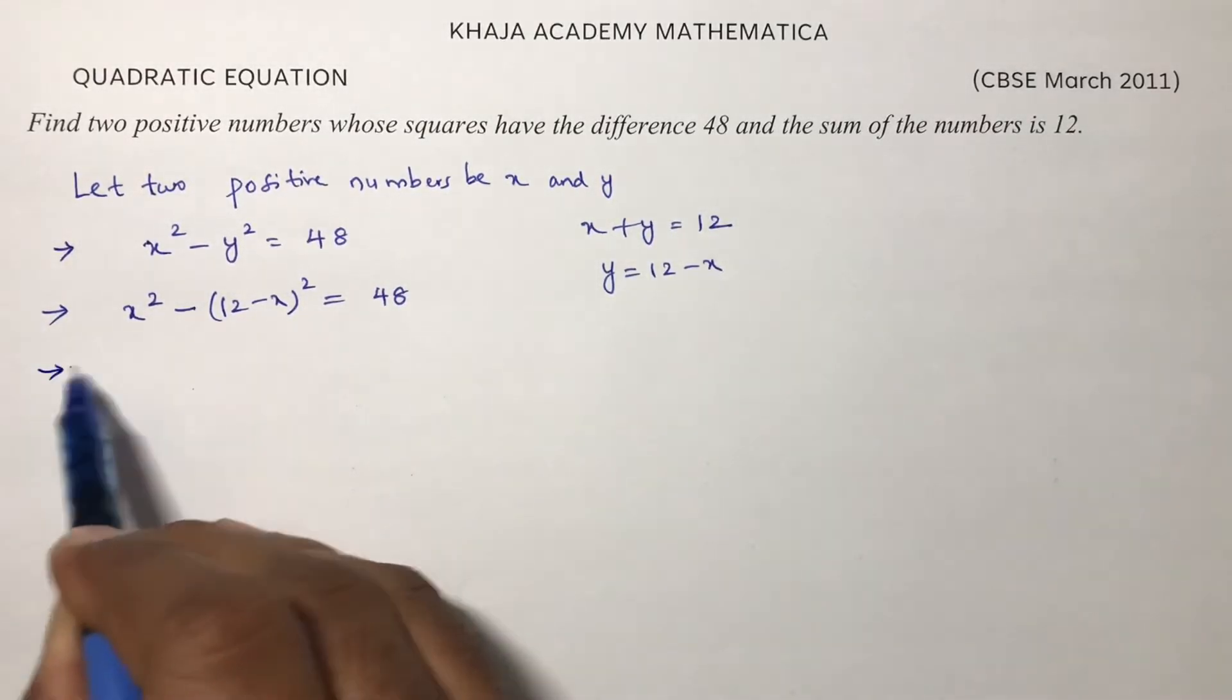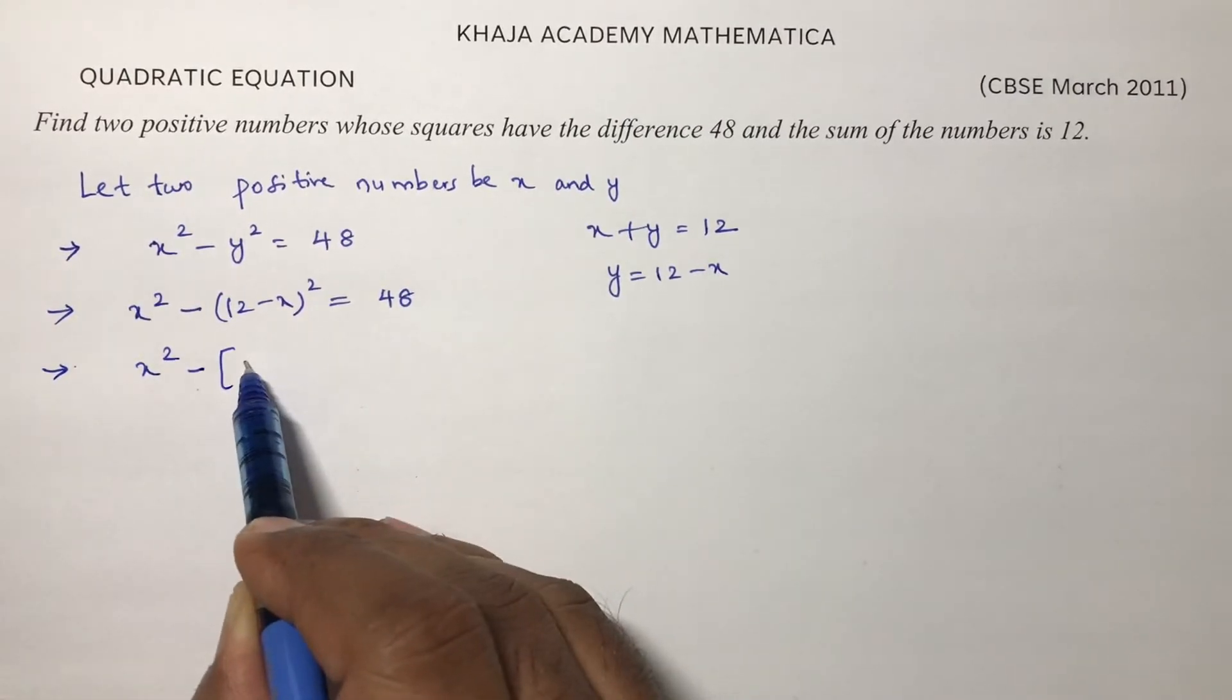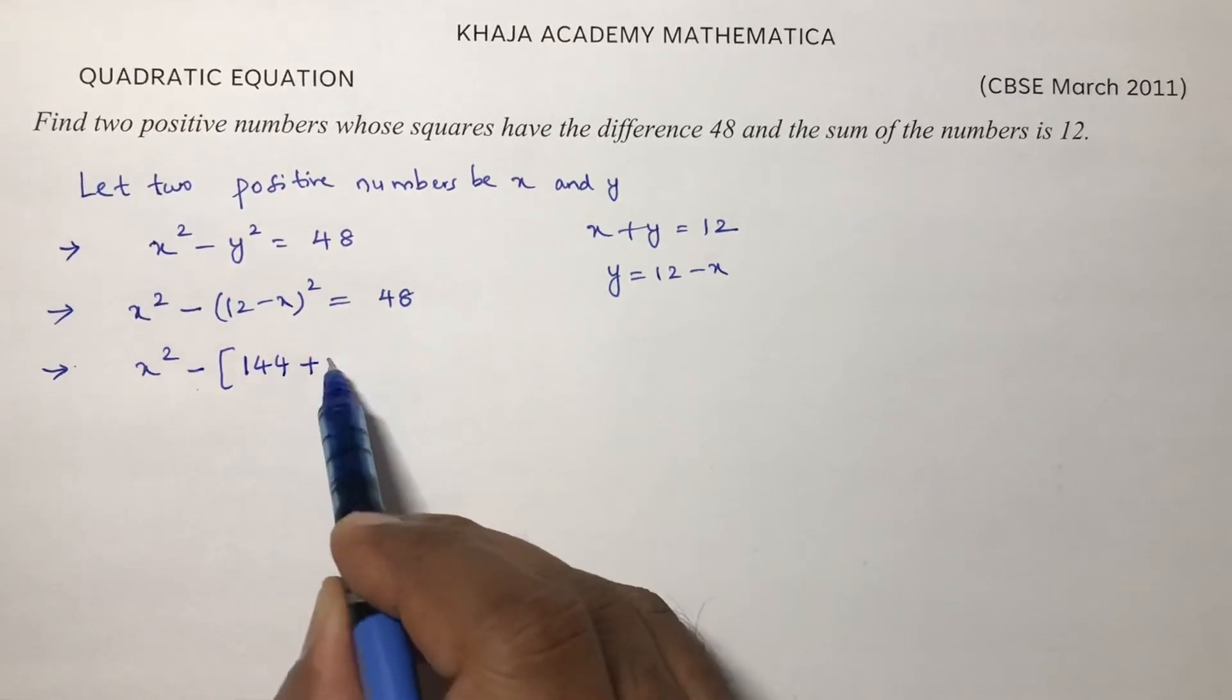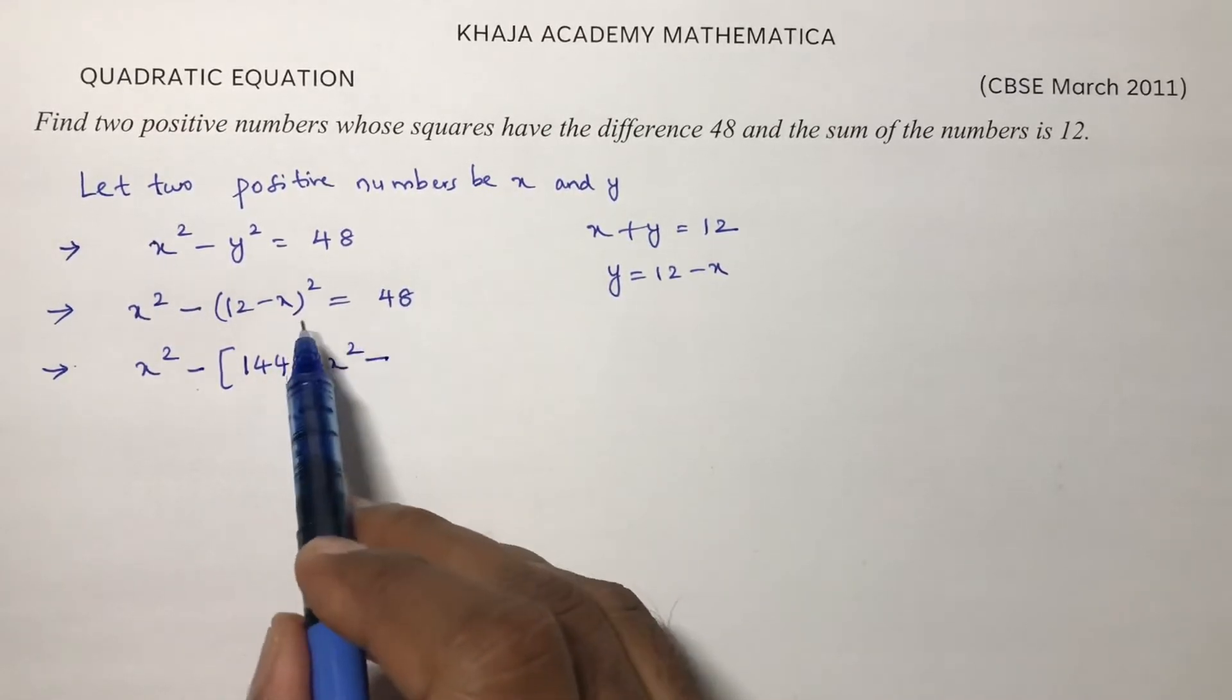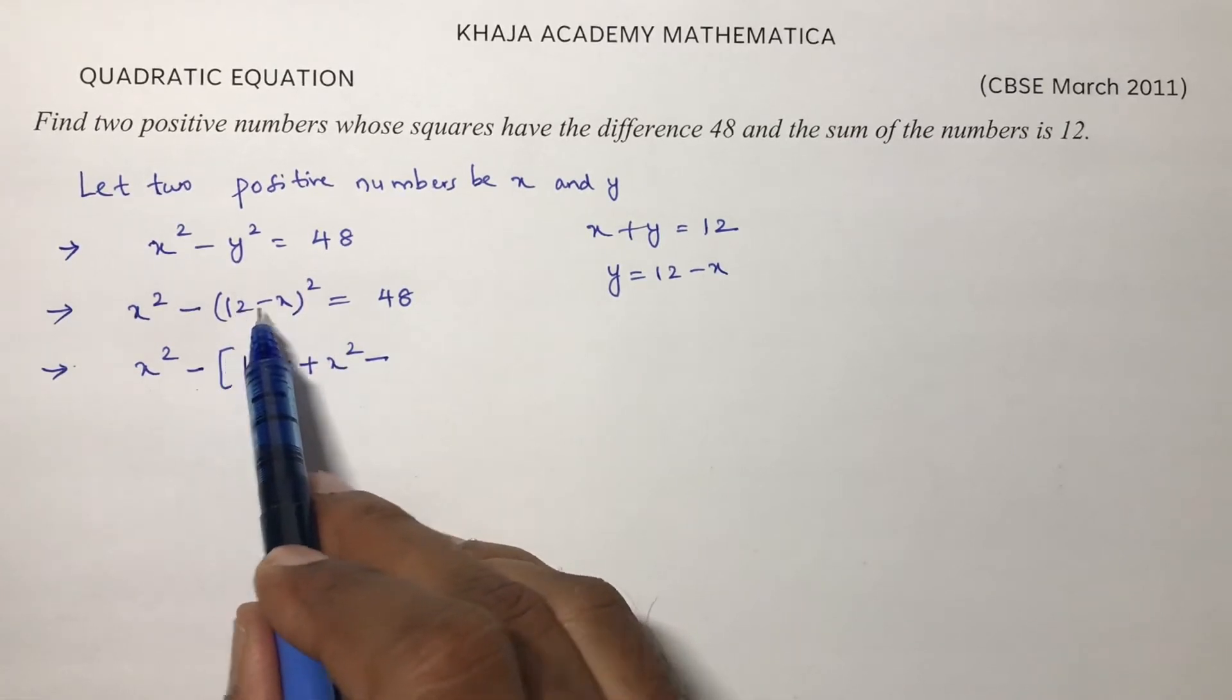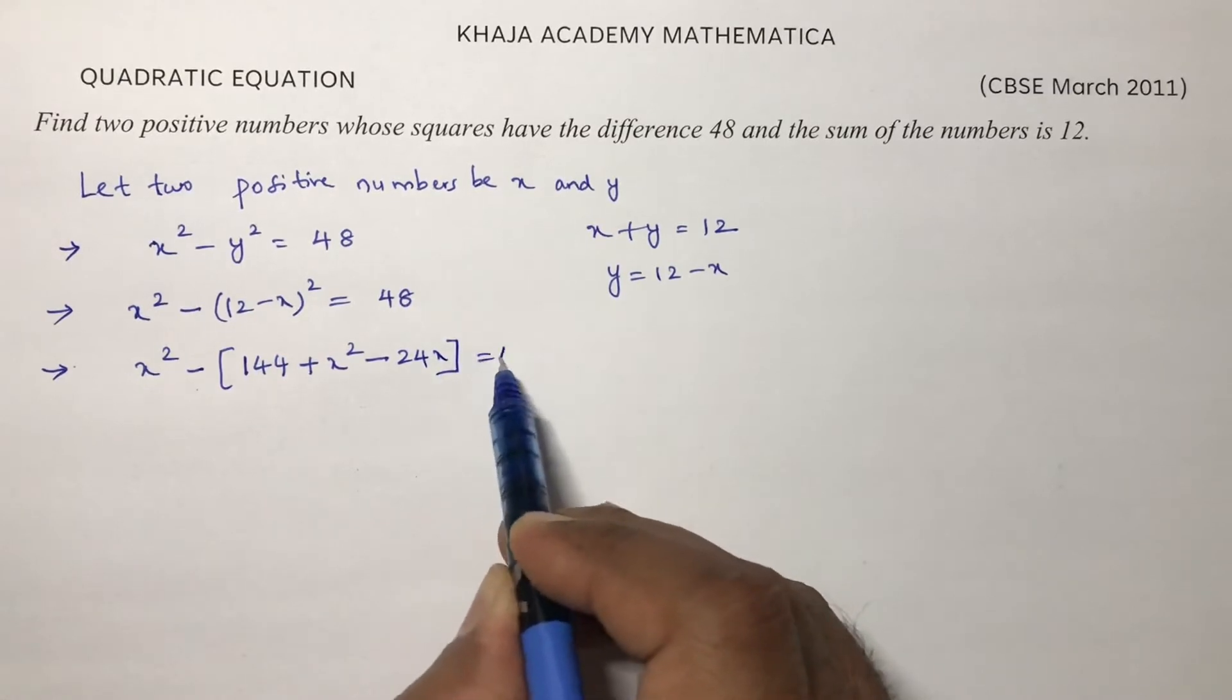Now simplifying, x² minus - it is in the form of (a - b)² whole square. So a² which is 12², plus b² minus 2ab, that is 2 × 12 × x = 24x. So x² - (144 + x² - 24x) = 48.